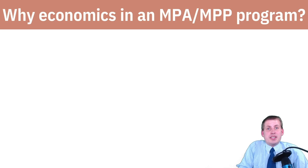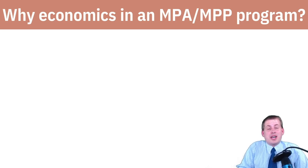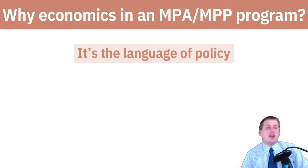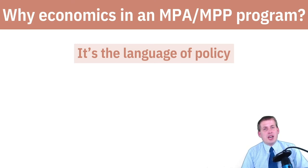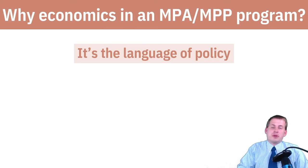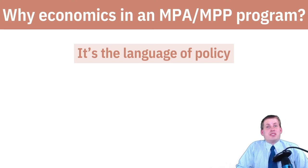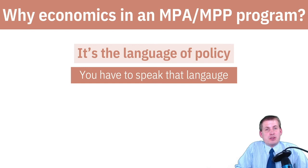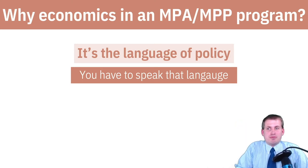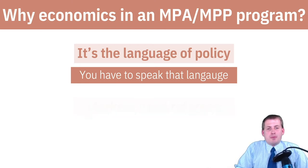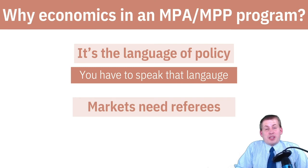One of the reasons we do this in an MPA and MPP program nationwide is that economics is the language of policy. When you're talking about implementing a new policy, you talk about costs and benefits and marginal utility — supply and demand and all these vocabulary terms we're going to learn throughout the semester. These are very common policy-oriented terms, and you need to understand what people are talking about; you have to be able to speak the language. If you show up at an economics planning meeting with the governor's office, they're going to start throwing out words like diminishing marginal returns, and you have to understand what they mean.